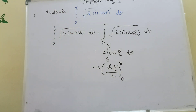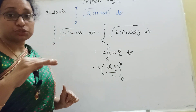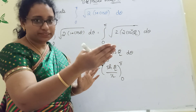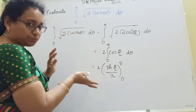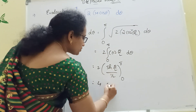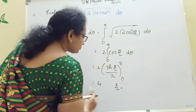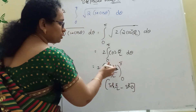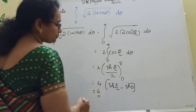Applying the limits 0 to pi: we get 4 into sin(pi by 2) minus sin(0). Sin(pi by 2) is 1, and sin(0) is 0. Upper limit minus lower limit gives 4 into 1 minus 0, so the answer is 4.